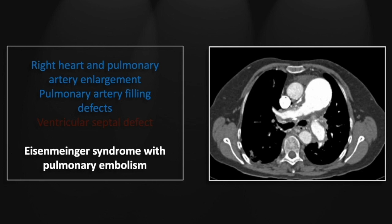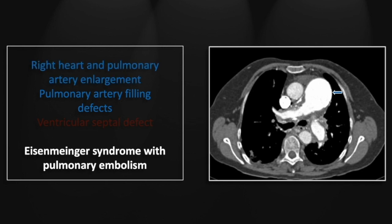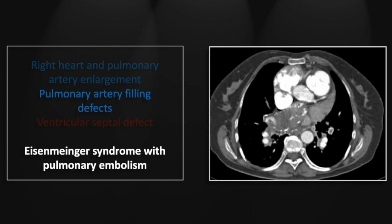Our next case is Eisenmenger syndrome resulting from an acute pulmonary embolism. This patient has a chronic ventricular septal defect and had massive volume overload and pulmonary hypertension throughout her pulmonary system. There is huge enlargement of the pulmonary artery, and there is extensive wall thickening and calcification throughout the pulmonary arterial system. In the inferior mediastinum, the inferior aspect of the right pulmonary artery demonstrates wall calcification and marked hypodense thickening. In the left lower lobe, there is a central filling defect consistent with an acute pulmonary embolism.